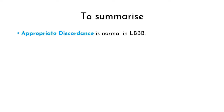Does this ECG fulfill Sgarbossa Criteria? Concordant ST elevation is present in lead 2, V5 and V6. Even though V5 has concordant ST elevation, it is not significant because the ST elevation is less than 1 mm. So criteria one is fulfilled only in lead 2 and V6. Concordant ST depression is present in V1, V2 and V3, so criteria two is also fulfilled. Excessively discordant ST elevation is present in lead 3 and AVF, clearly much more than 25% of the preceding S wave amplitude. In short, this ECG satisfies all three criteria and therefore is Sgarbossa positive.